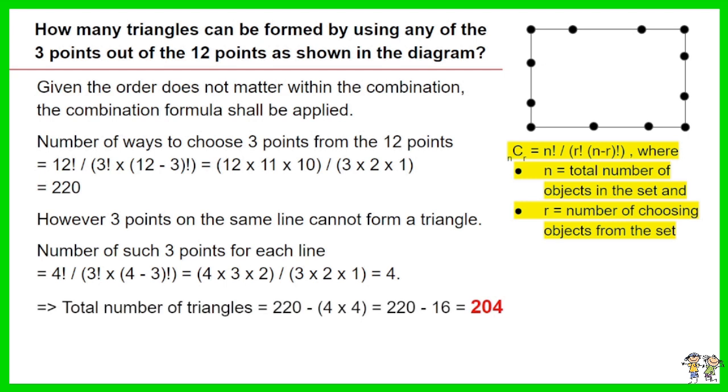Thus the total number of triangles equals 220 minus 4 times 4 equals 220 minus 16. The answer is 204.